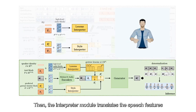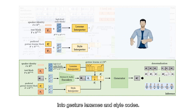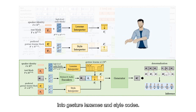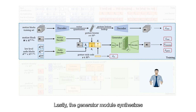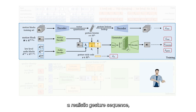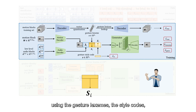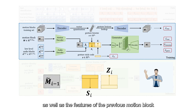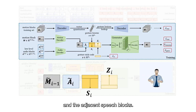Then, the interpreter module translates the speech features into gesture lexemes and style codes. Lastly, the generator module synthesizes a realistic gesture sequence using the gesture lexemes, the style codes, as well as the features of the previous motion block and the adjacent speech blocks.